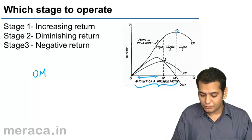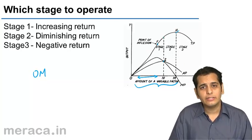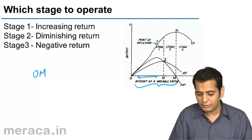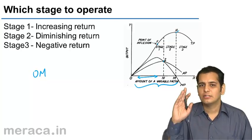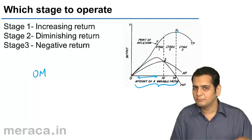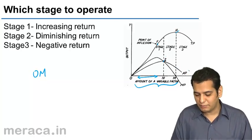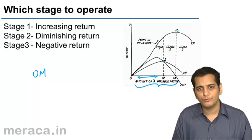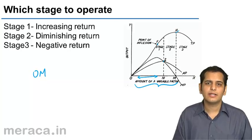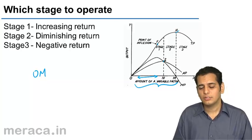We know that the producer is getting increasing returns in the first stage. The production is not only increasing but increasing at an increasing rate. Till point F it is increasing at an increasing rate; after F it starts to become flatter. But when the average product is maximum — when he produces ON number of units — it is still increasing at an increasing rate. So wouldn't the producer like to be at this level of production?